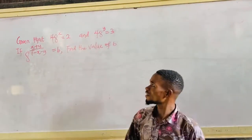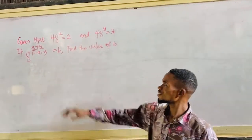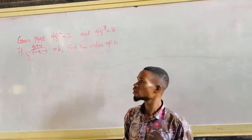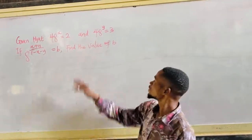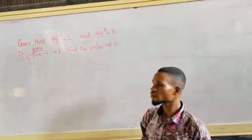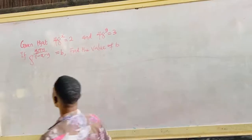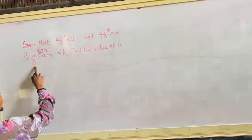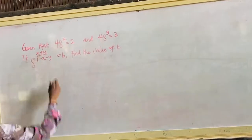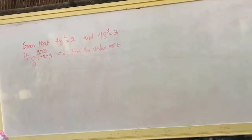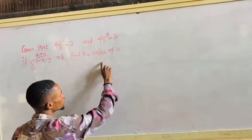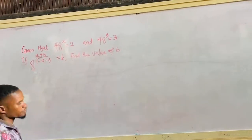Hi guys, given that 48 raised to the power of x is equal to 2 and 48 raised to the power of y is equal to 3, if x raised to the power of x plus y all over 1 minus x minus y is b, find the value of b.